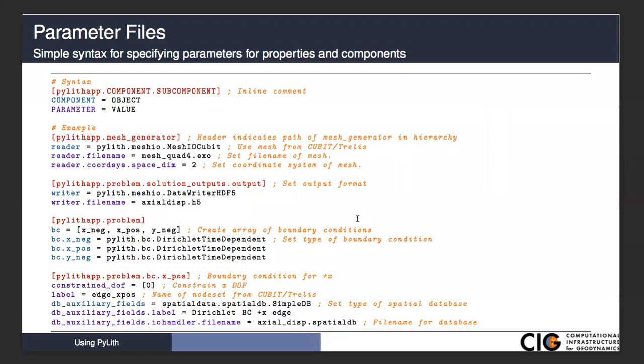The parameter files have a relatively simple syntax. At the top, you always have your headers in square brackets. Comments are the pound sign, just like a shell script, and then we have basically a parameter equals value syntax for every different setting. Here's an example for our mesh generator. We're going to tell it the type of reader we are using. In this case, it's the reader for Cubit or Trellis. That reader needs a file name, so we specify the file name, and then the coordinate system. We're in 2D, so we need to clarify that's different than the default.